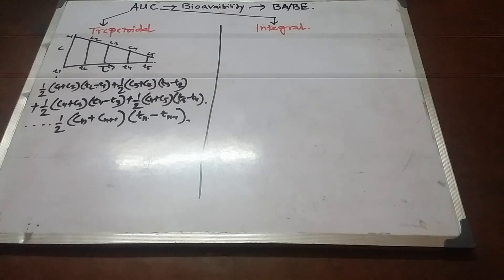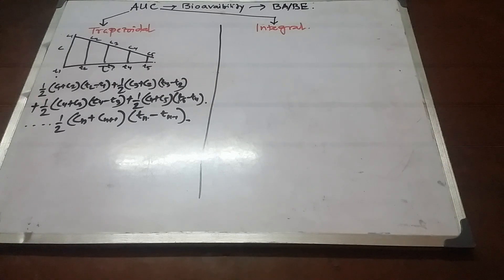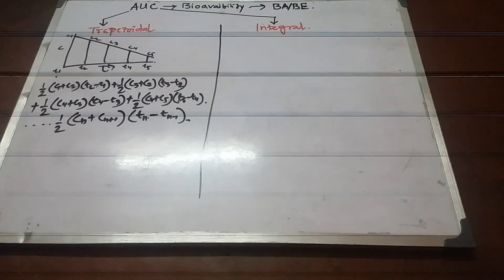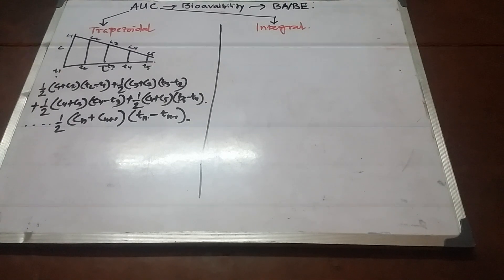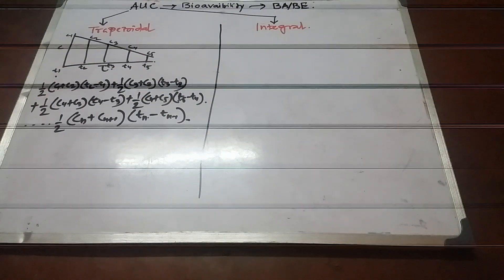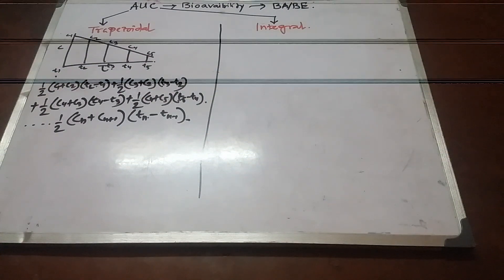Generally, the AUC or area under the curve is mathematically defined as the integral of the concentration with respect to time, integrated from zero to infinity. This represents the total change of concentration with respect to time, giving us the area under the curve. To begin the derivation, we must make an initial consideration of the concentration.